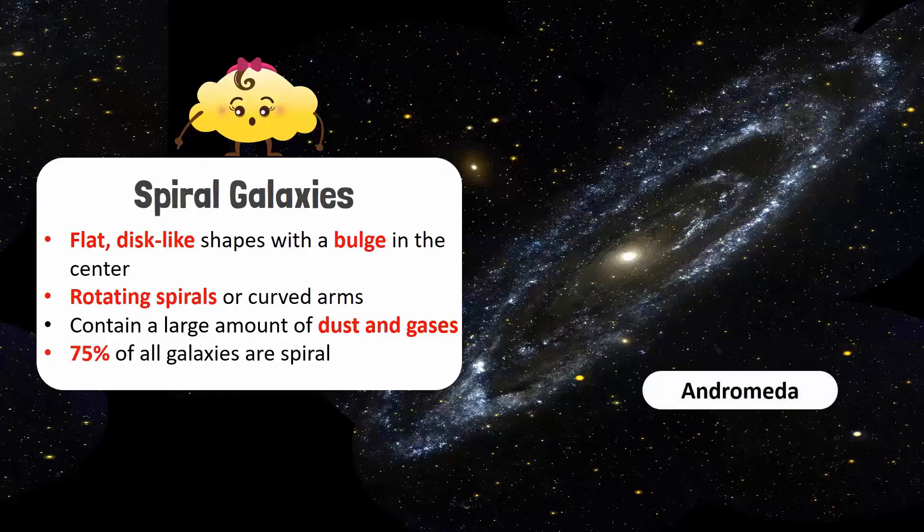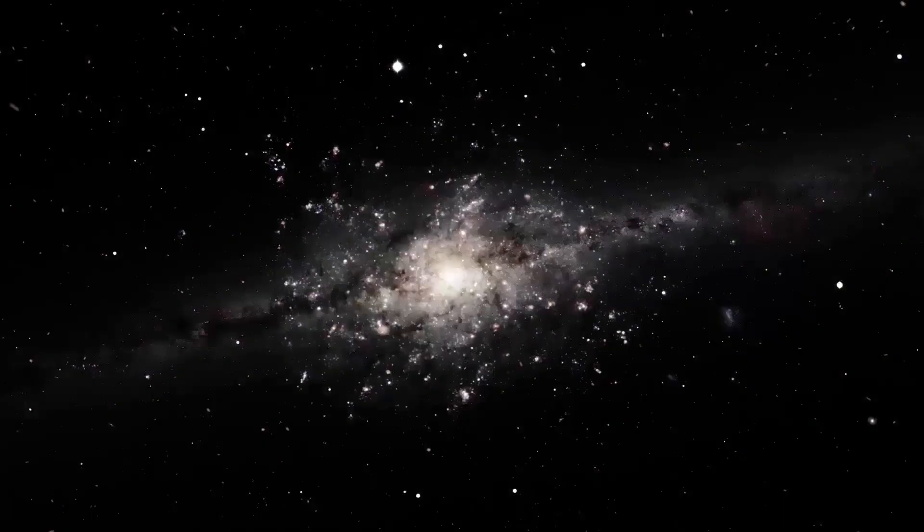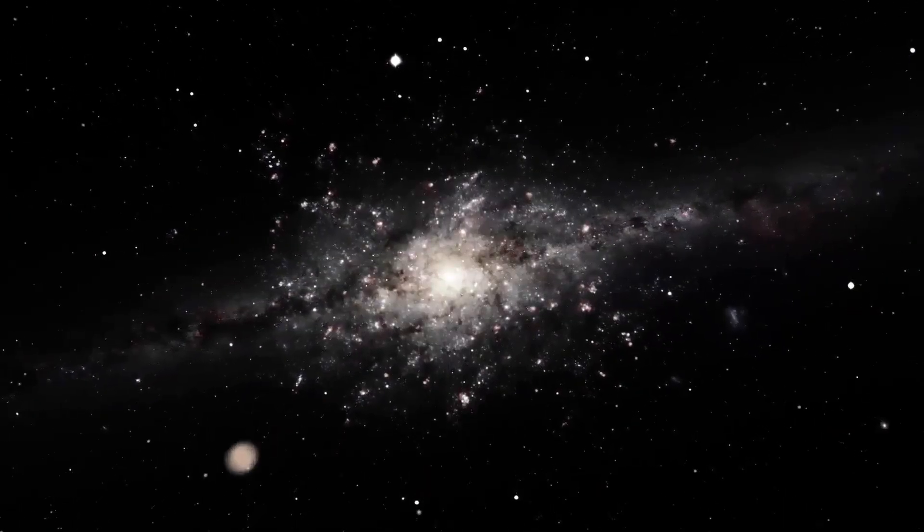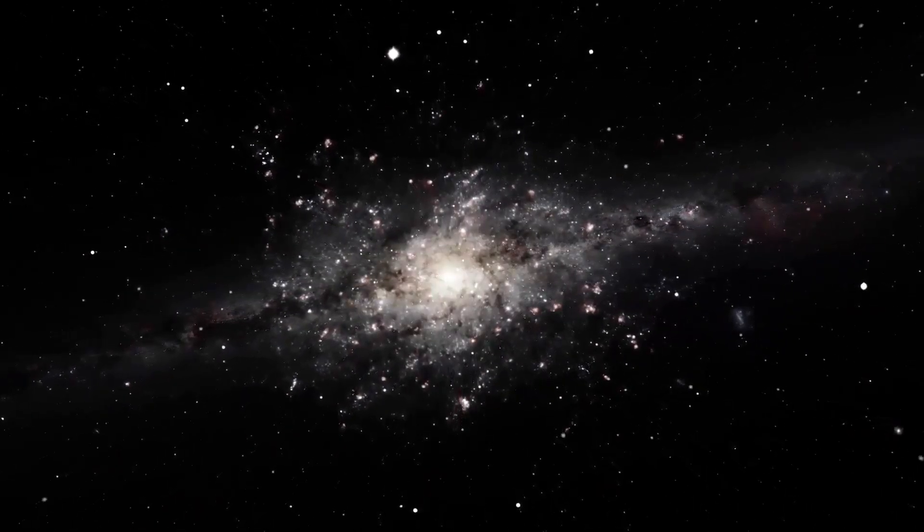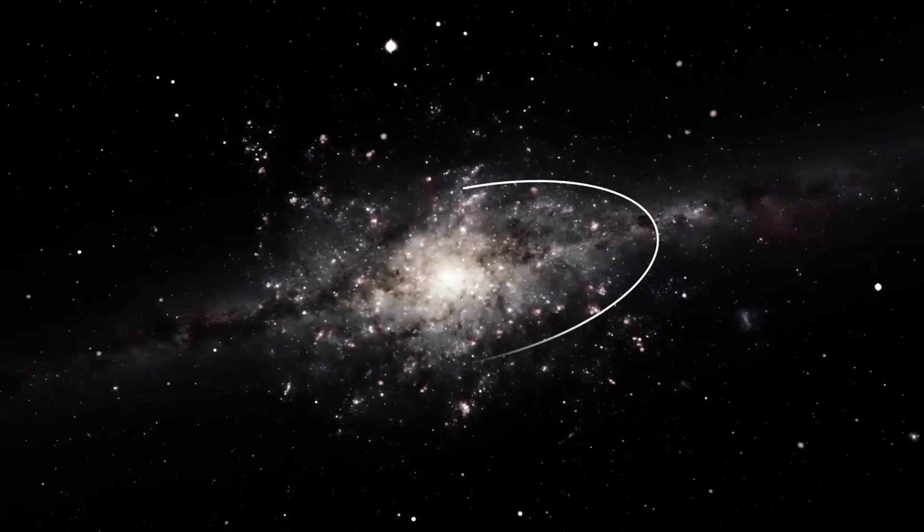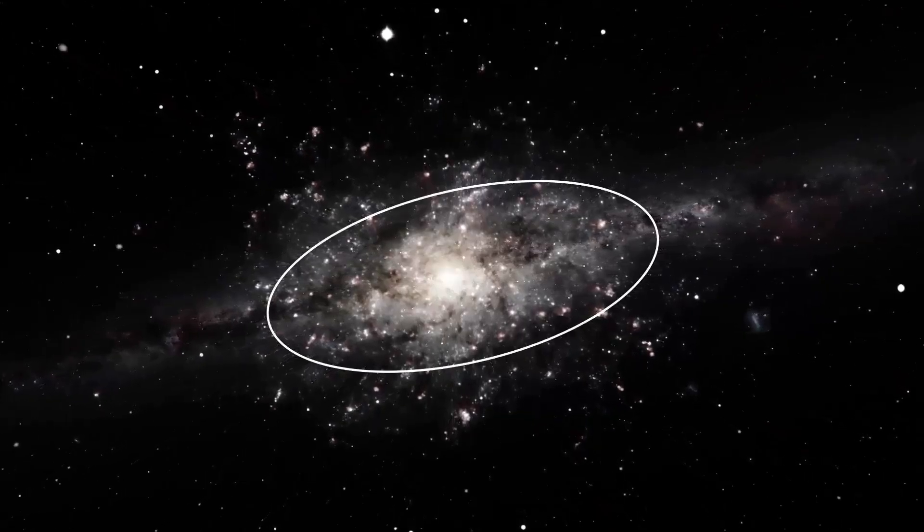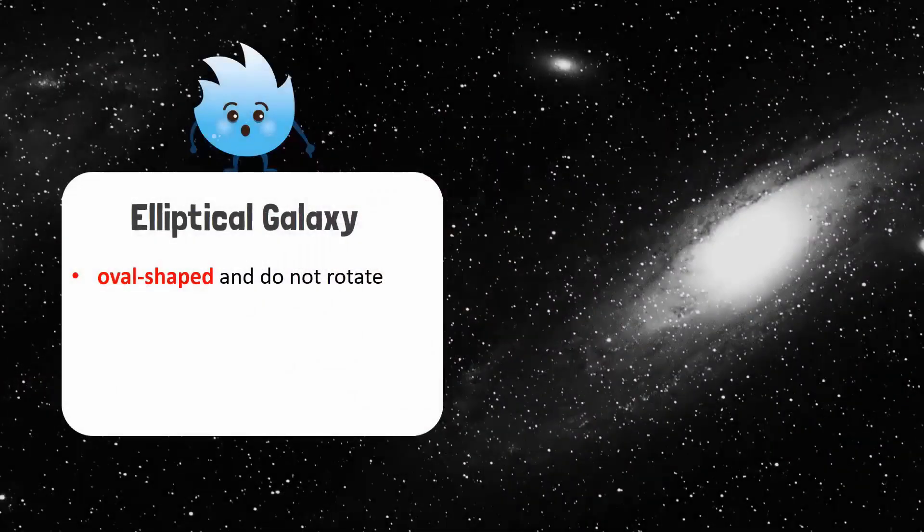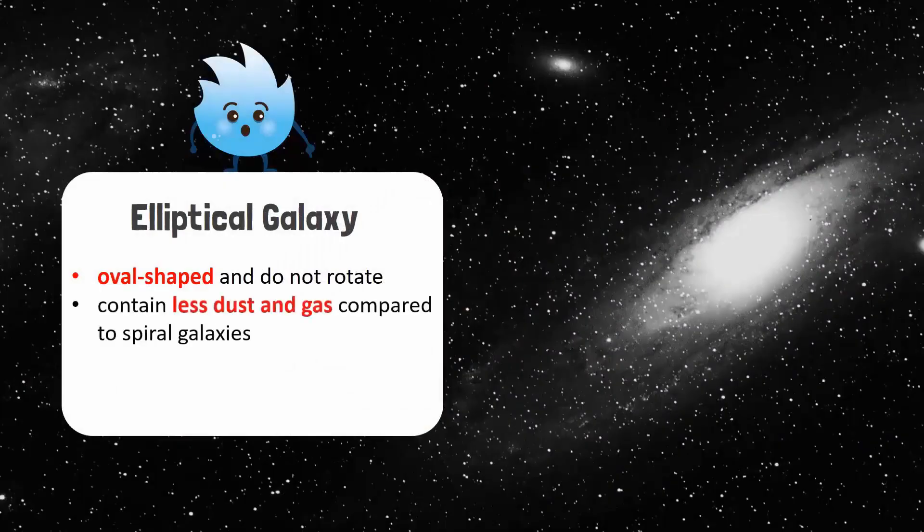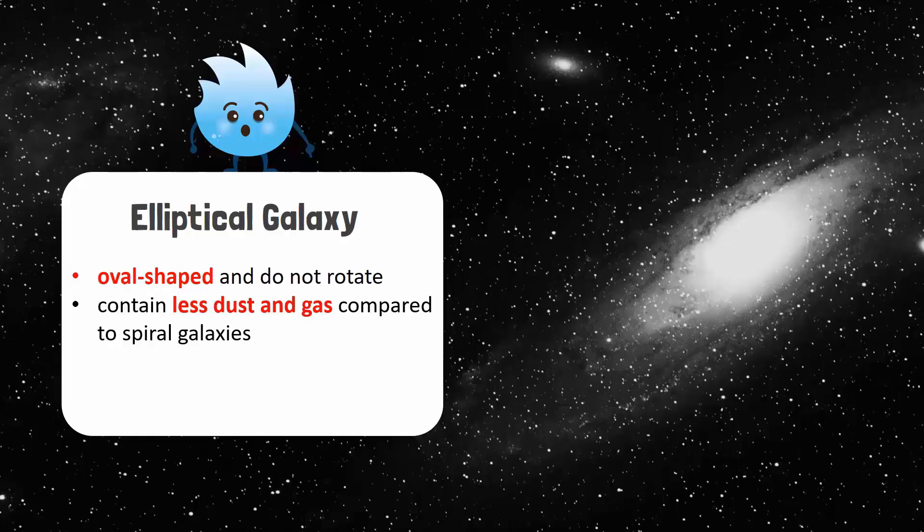Now look at this galaxy. This is an elliptical galaxy. Elliptical galaxies are oval in shape and look like flattened balls. These galaxies don't rotate and contain less dust and gas compared to spiral galaxies. As new stars cannot form in elliptical galaxies, they are mostly made up of old stars. Twenty percent of all galaxies are elliptical.